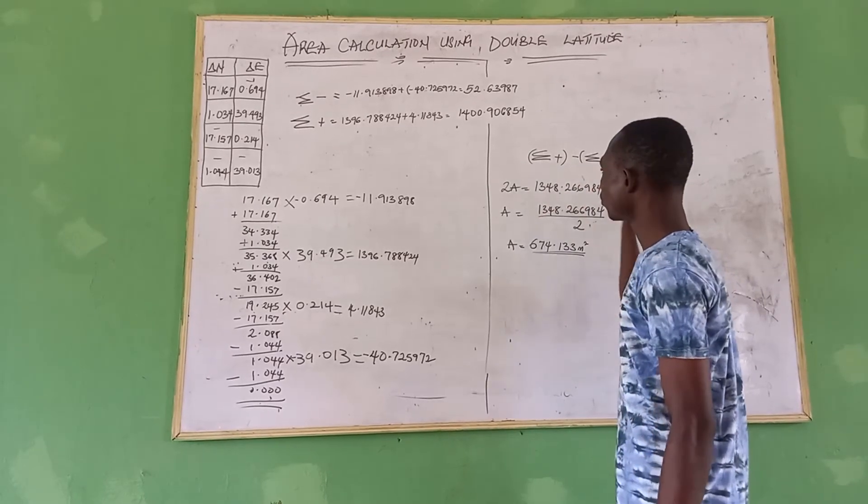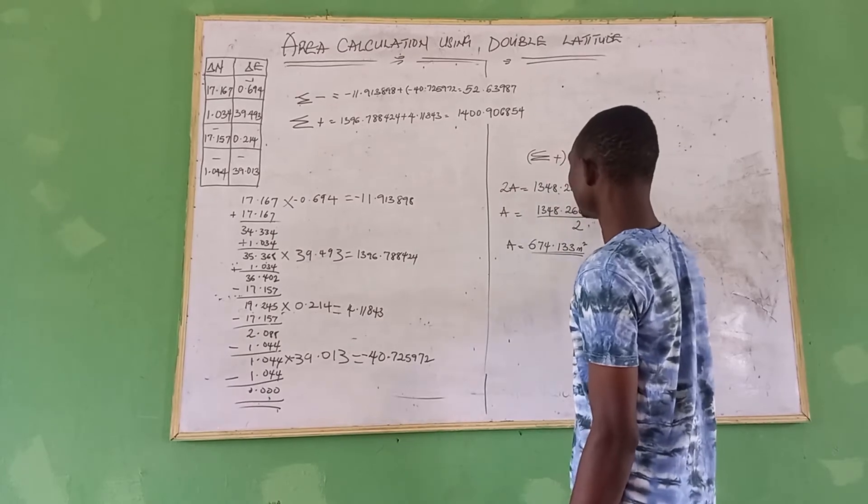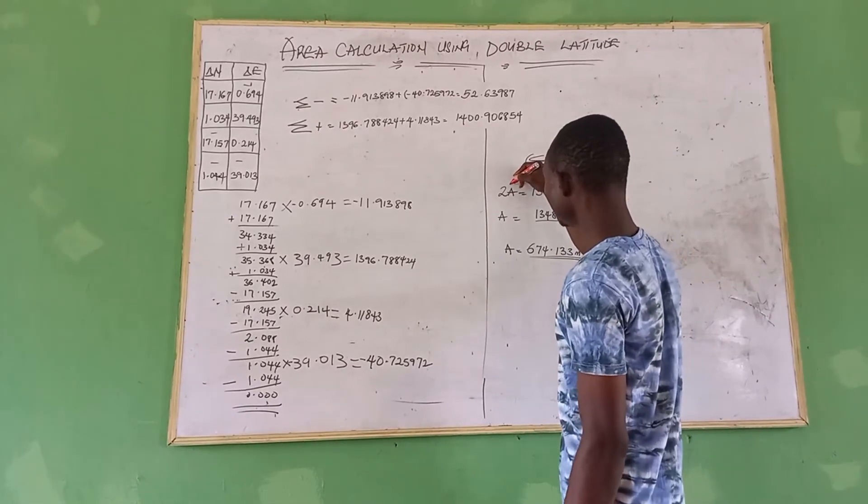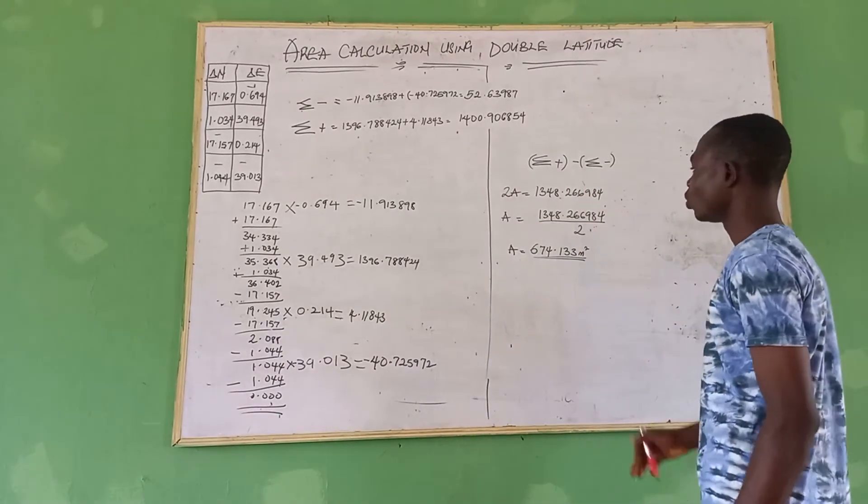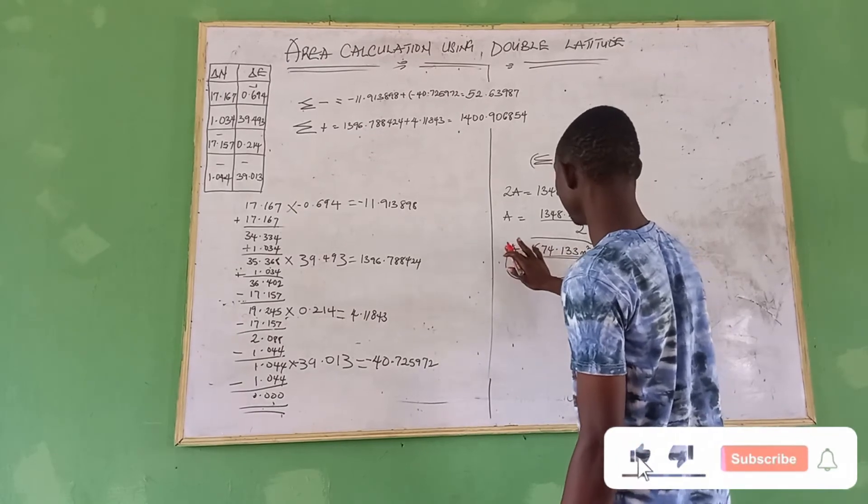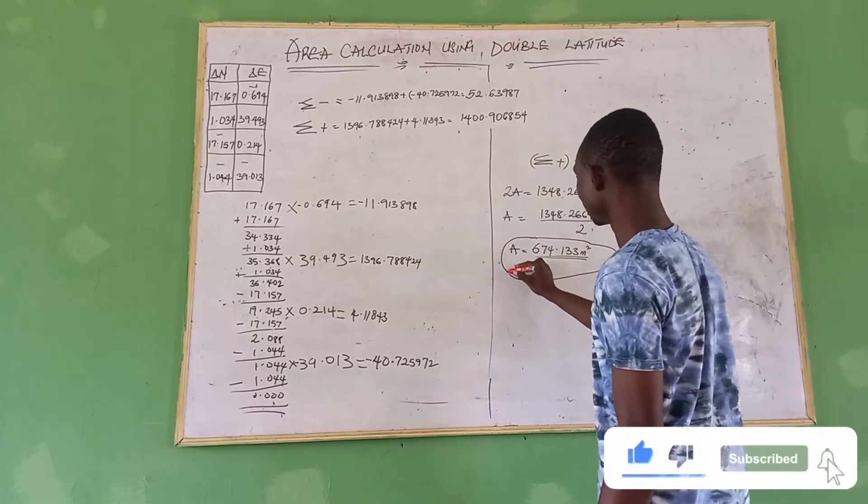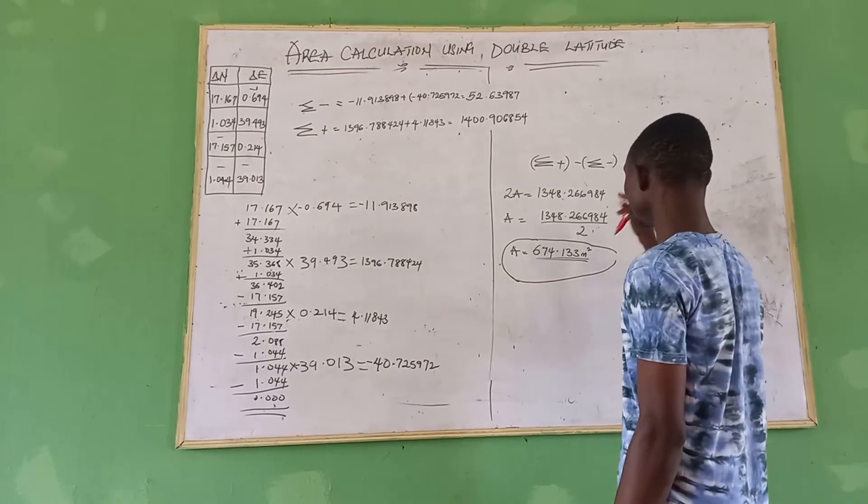Now we have two A is equal to that value. That is this stage representing our area value. So area divided by two now is going to give us a value which is this. Area divided by two now will give us a value which is 674.133 meter square.